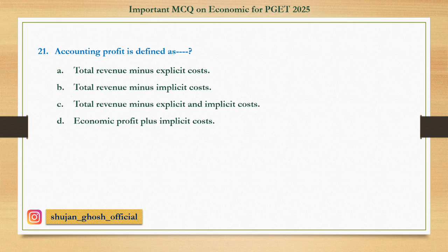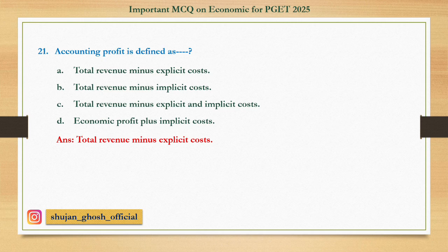Question number twenty-one: Accounting profit is defined as — option A: total revenue minus explicit cost; B: total revenue minus implicit cost; C: total revenue minus explicit and implicit cost; D: economic profit plus implicit cost. Answer: total revenue minus explicit cost.